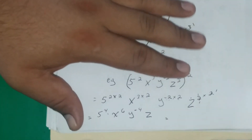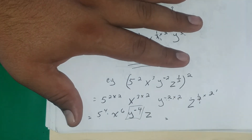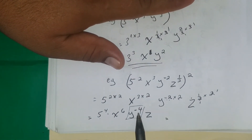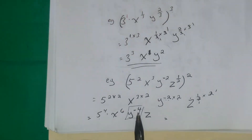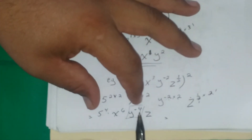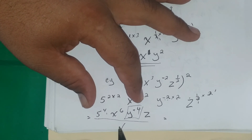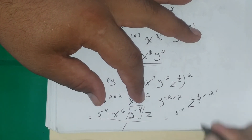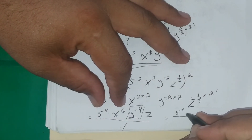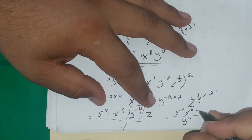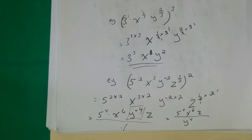We're not finished yet — I noticed there's a negative 4 on y, so I need to make it positive. According to the law: if you have a negative power in the numerator, you move it to the denominator to make it positive. This expression is over 1, so y to the negative 4 moves to the denominator as y to the fourth. We leave 5 to the fourth at the top, x to the sixth at the top, bring down y to the fourth in the denominator, and z stays at the top. That's our final answer.